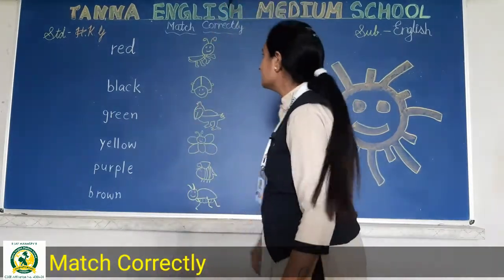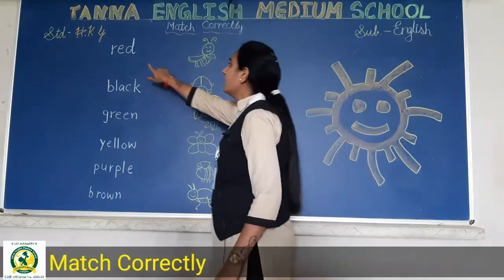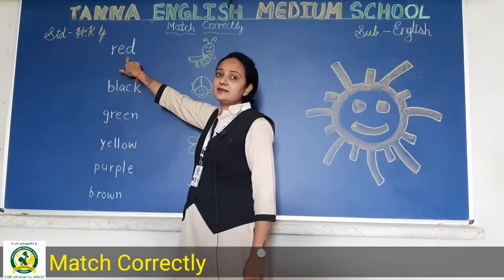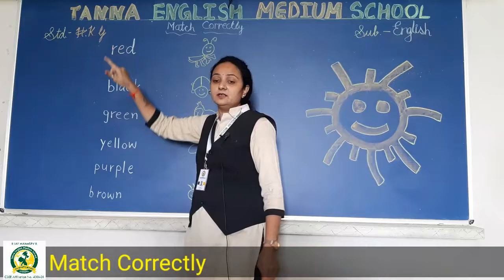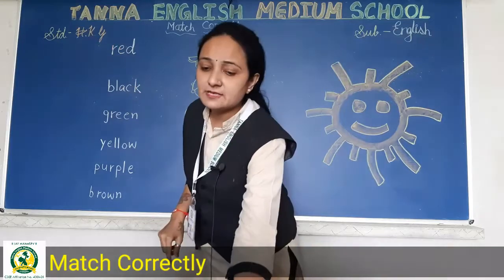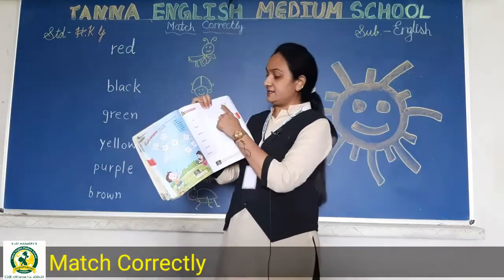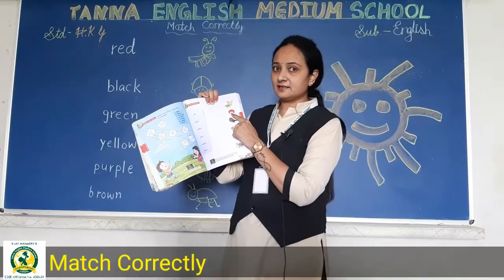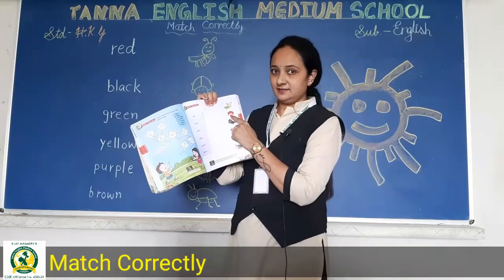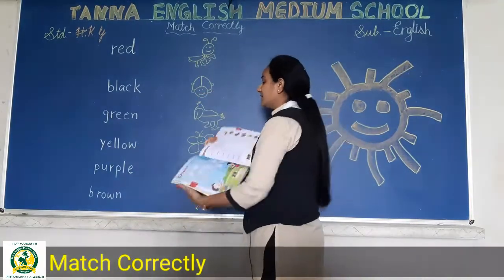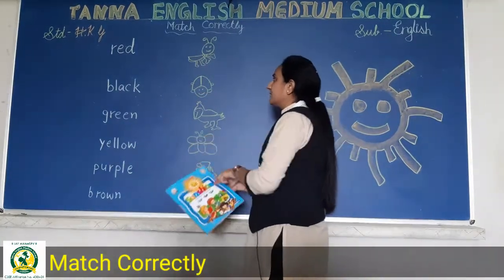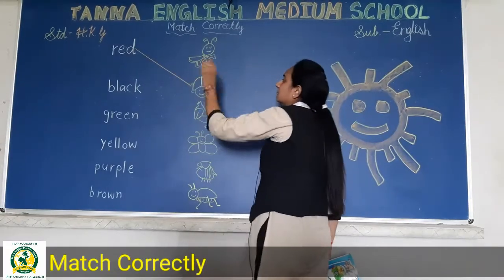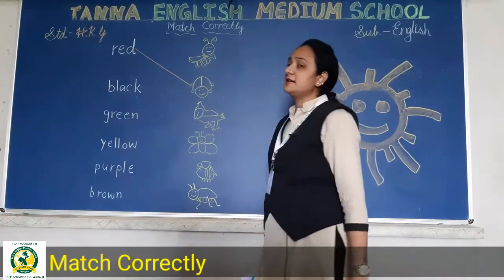First is red — red. Yeh kunsa color hai? Red. Toh aapko isme dekhna hai ki red color ka kya hai. Yeh bug hai na red color ka — toh aapko yeh bug ke saath match karna hai. Red ko bug ke saath match karo.